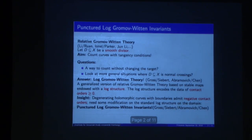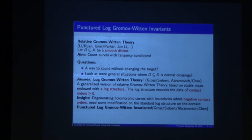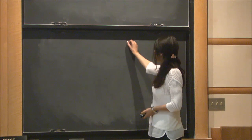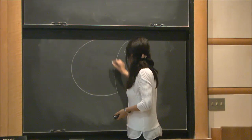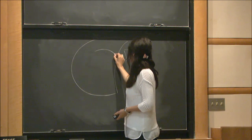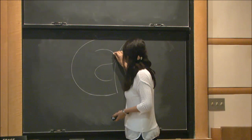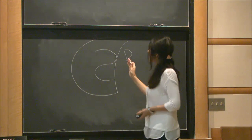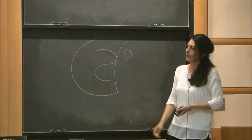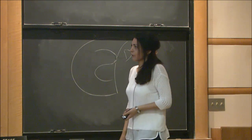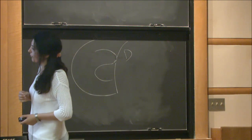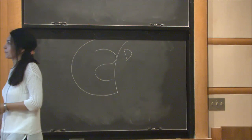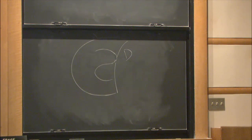If you're doing relative Gromov-Witten theory, a natural question you might ask is this: assume you have a divisor D, a smooth divisor in D, so it's some smooth variety X, and you're interested in counting curves with tangency conditions on D. This is a more difficult question to answer than it sounds because you may run into several transversality issues, so you need to do some bubbling off and change your target.